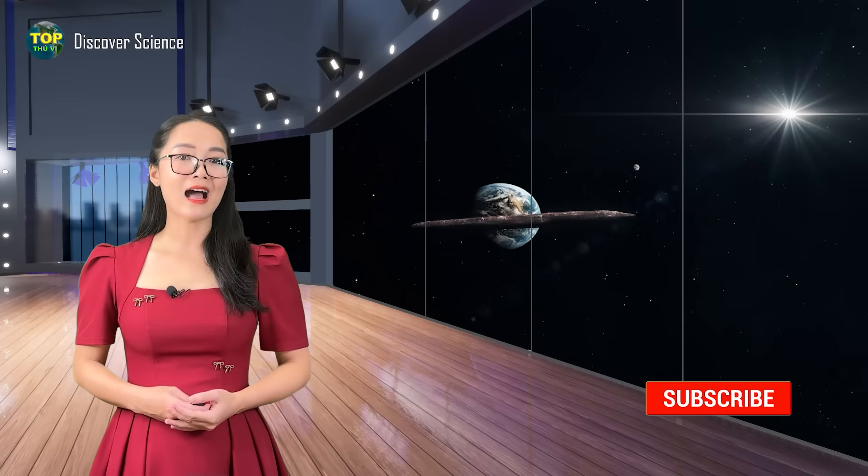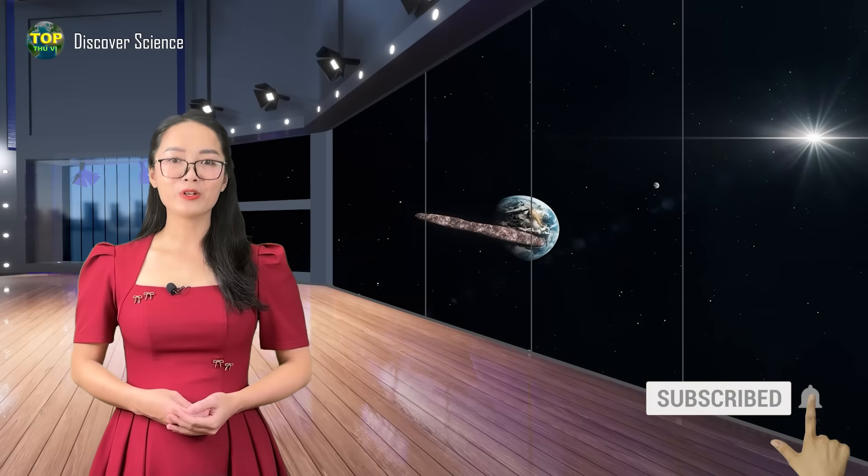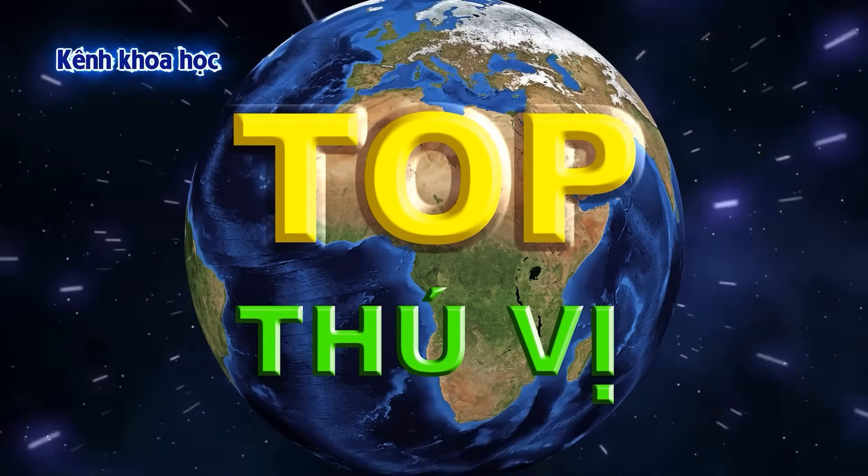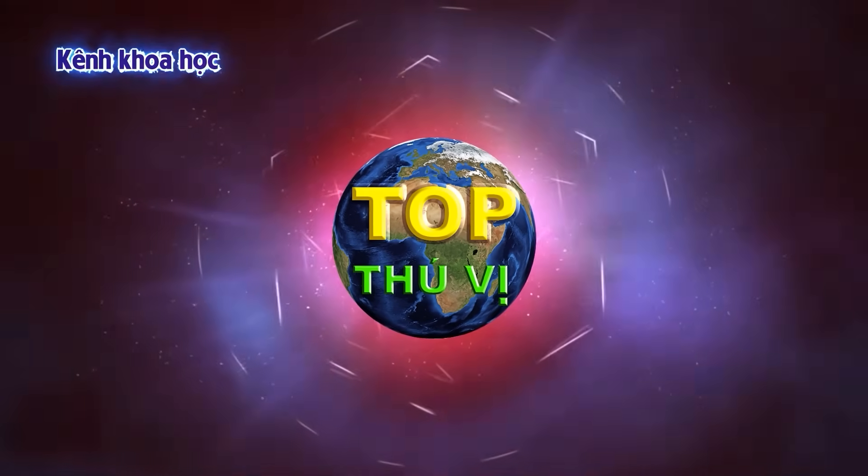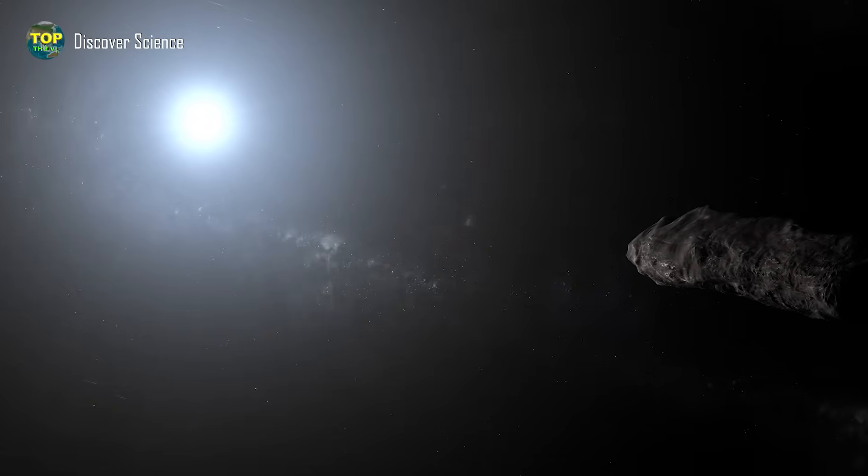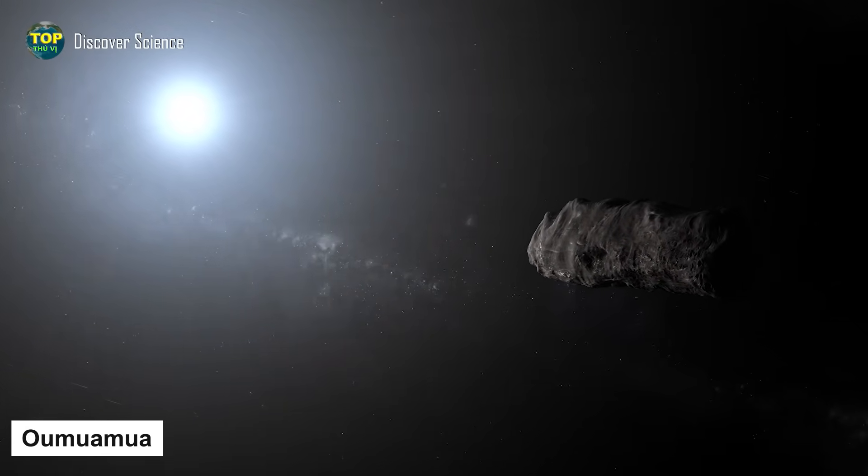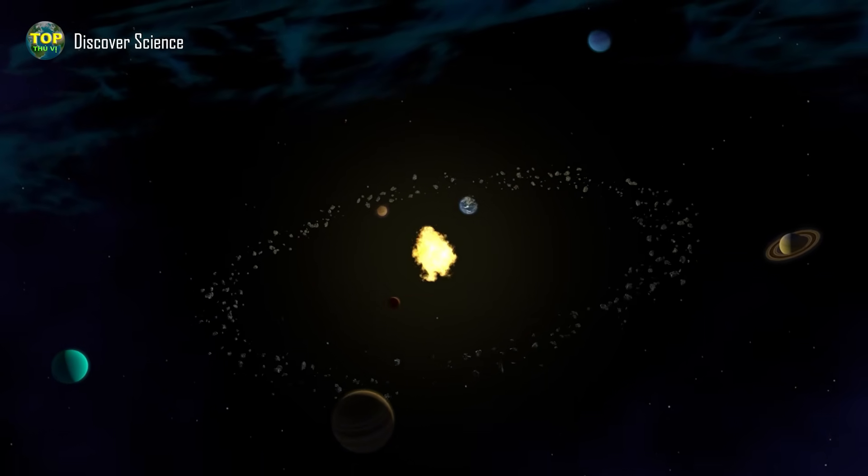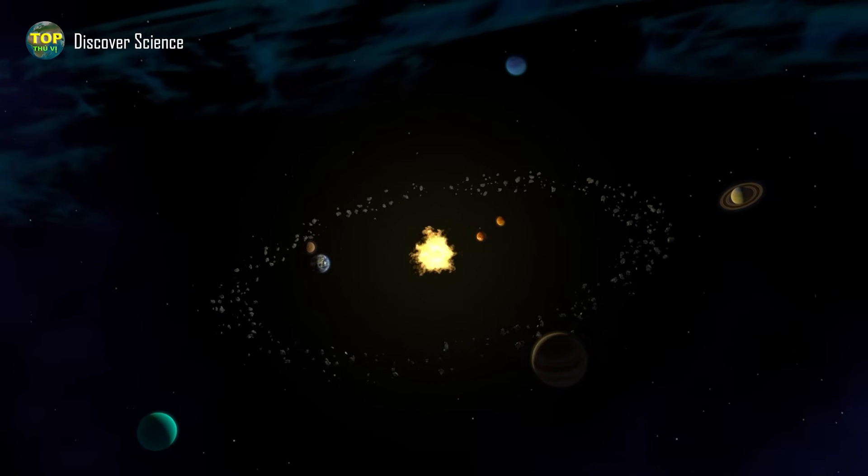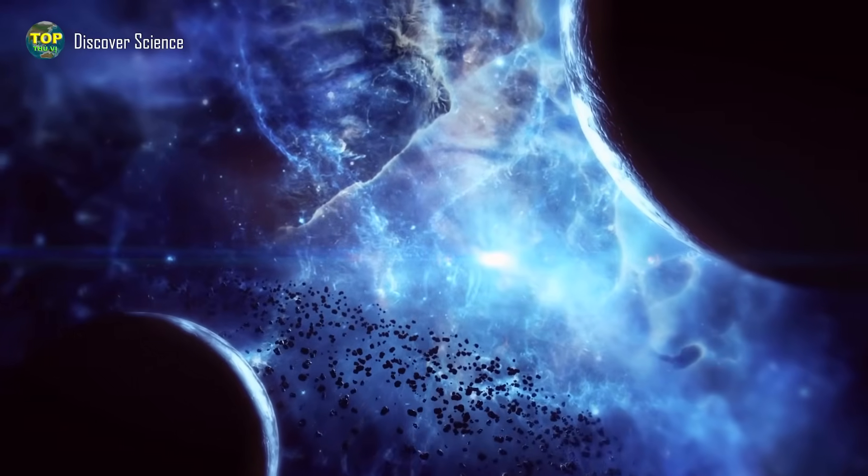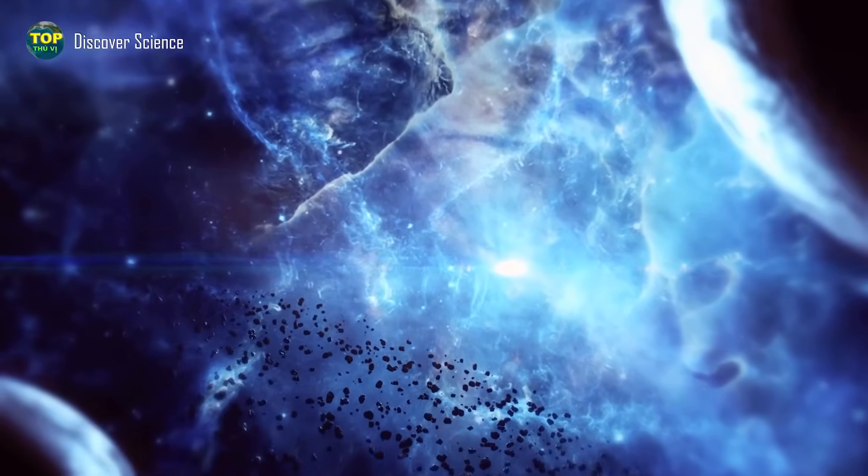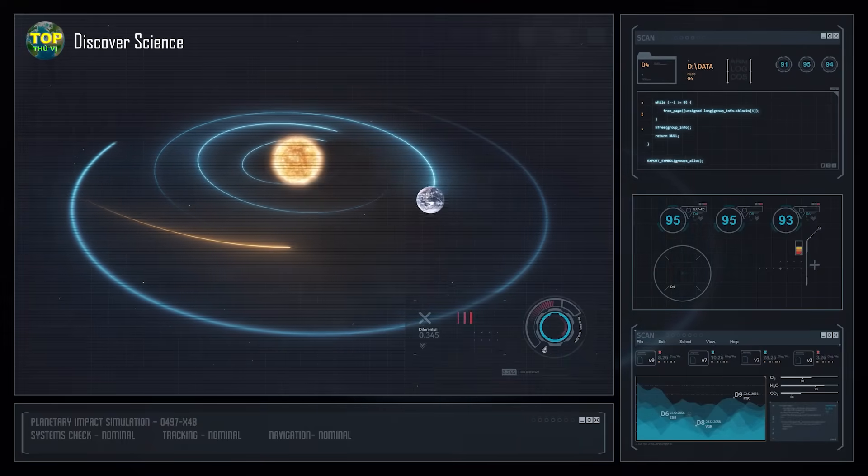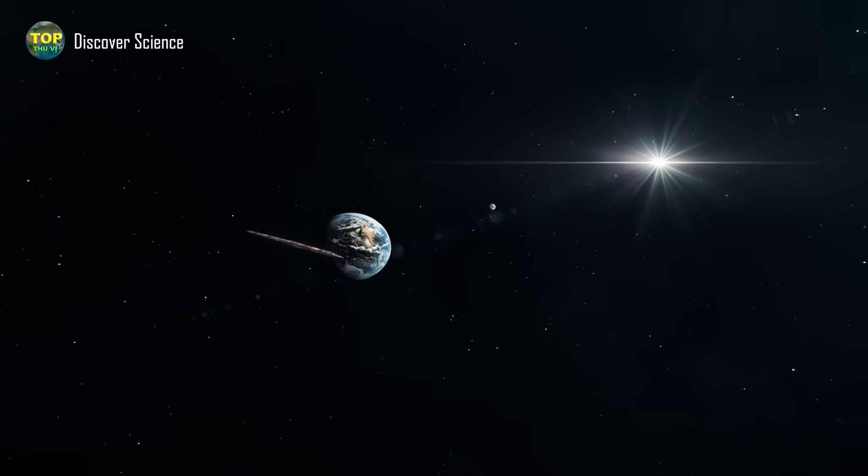'Oumuamua is the first known interstellar object to visit our solar system. That means it originated from outside the solar system and is not bound by the gravitational pull of our sun—a starting point that sparks endless curiosity. But before this fascinating truth was known, scientists had made several mistakes, from detecting it far too late to misidentifying its true nature.